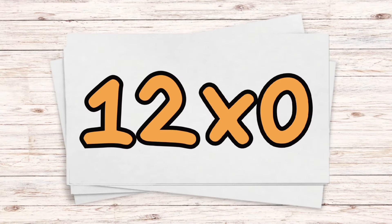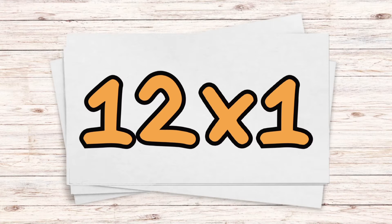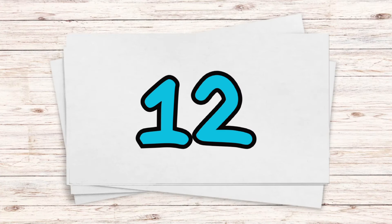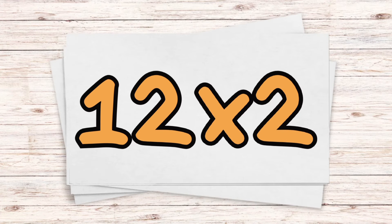Let's go. 12 times 0 — 0. 12 times 1 — 12. 12 times 2 — 24.